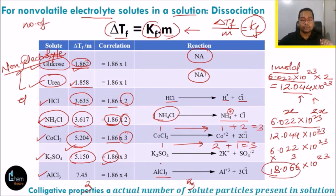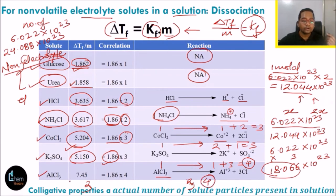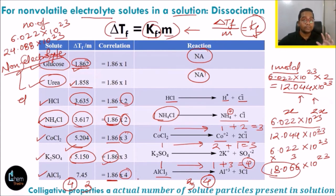For AlCl3, since 4 particles are produced from 1 molecule, you expected 6.022 × 10²³ particles, but actually you have 4 times that = 24.088 × 10²³. So if the number of solute particles becomes 4 times, the colligative property becomes 4 times. If the molecular weight were based on 6.022 × 10²³, the value would be 1.86, but because of dissociation it becomes 4 moles worth of particles, giving an experimental value of 7.45.